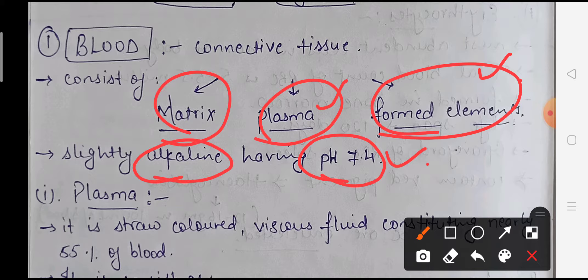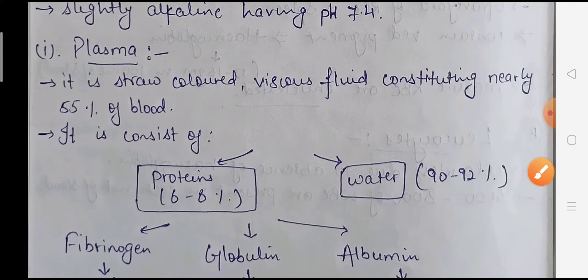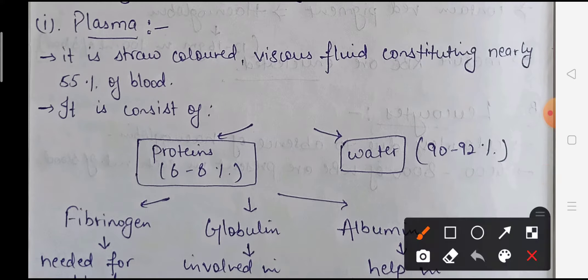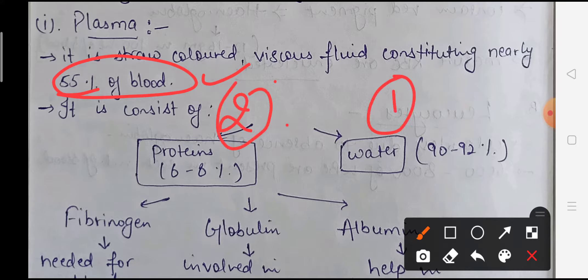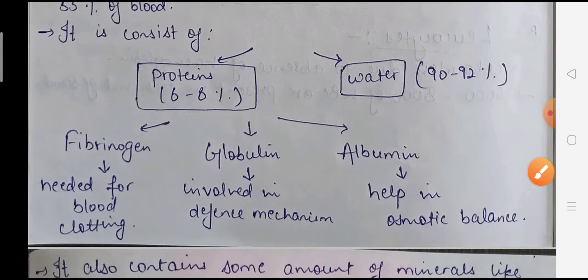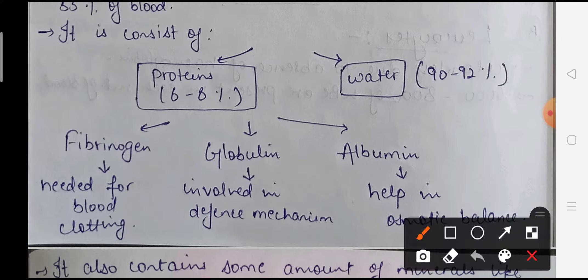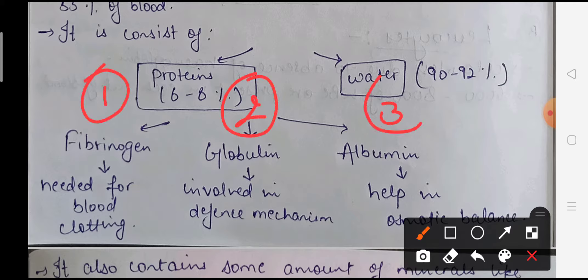Plasma is a straw-colored fluid which normally comprises 55% of blood. Plasma is made of two contents: the first is water and the second is protein. Normally, 90 to 92 percent of total plasma is water. Proteins make up about 6 to 8 percent. There are 3 main types of proteins found in plasma: fibrinogen, globulin, and albumin.